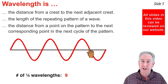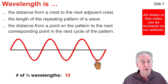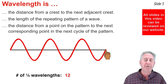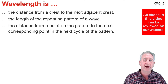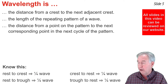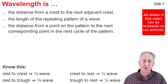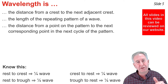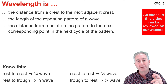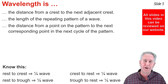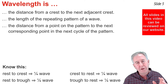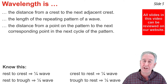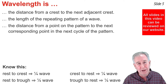When you're done you'll have counted a number of quarter-wavelengths — for example, 12 quarters equals three waves. Here's a summary: rest to crest is a quarter wave, crest down to rest is another quarter, rest down to trough is another quarter, and trough back up to rest is a quarter. As you practice, you'll get faster and start counting half-wavelengths instead.